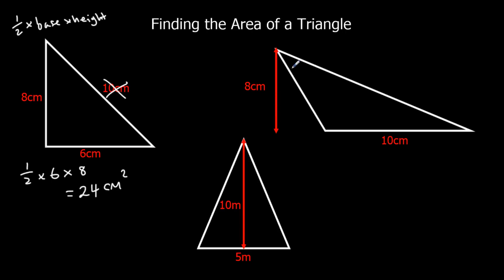This is the perpendicular height. So we've got half times the base, which is 10, times the height, which is 8. Half times 10 is 5. And 5 times 8 is 40. So 40 centimeters squared.